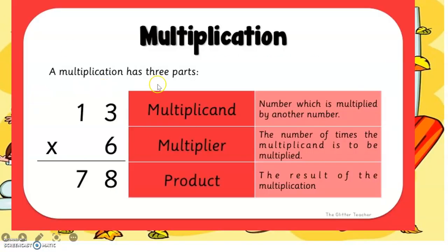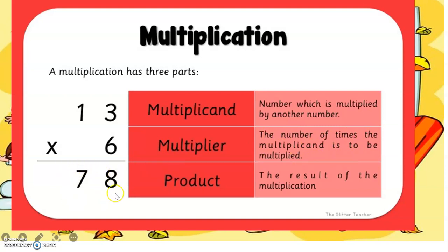Multiplication has three parts. The first one is multiplicand. The second one is multiplier. And the answer we call the product. So 13 times 6: 13 is the multiplicand — the number which is multiplied. Six is the multiplier — the number of times the multiplicand is to be multiplied. And 78 is the product — the answer or result. What is the product of 13 times 6? The product is 78.